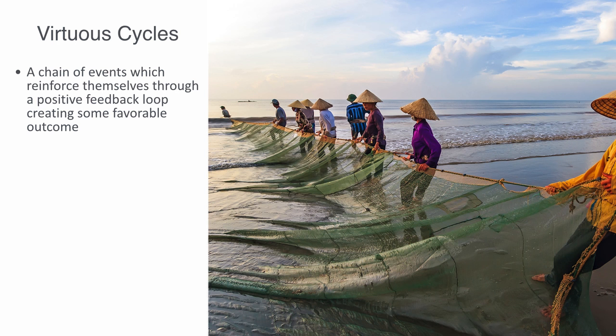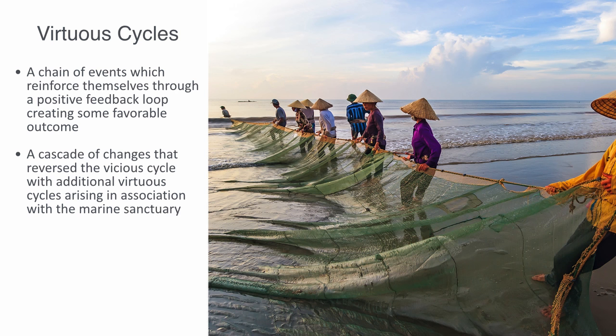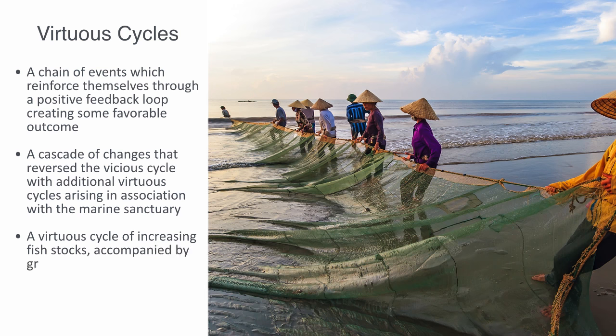Up to this point, the positive tipping point for Apo Island was the creation of a marine sanctuary, setting in motion a cascade of changes that reversed the vicious cycle, with additional virtuous cycles arising in association with the marine sanctuary. The sanctuary served as a nursery, contributing directly to the recovery of the fish stock in the island's fishing grounds. Success with the sanctuary stimulated the fishermen to set up sustainable management for the fishing grounds.